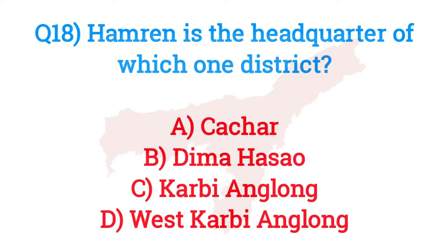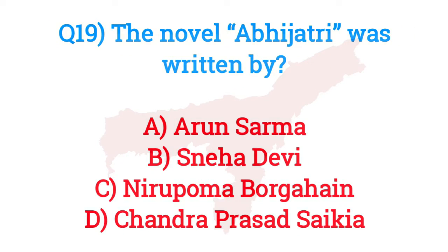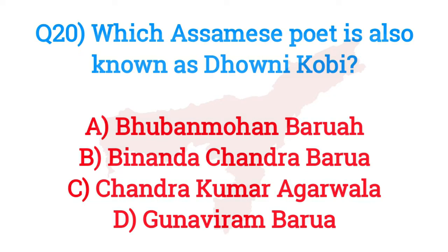Question number eighteen: Hamren is the headquarter of which district? The answer is option D — West Karbi Anglong. Question number nineteen: The novel Abhijatri was written by? The answer is option C — Nirupama Borgohain.